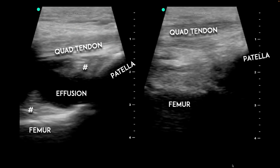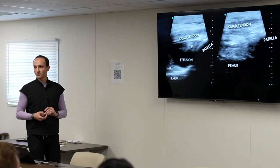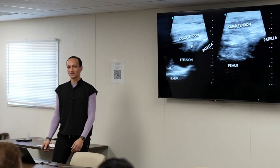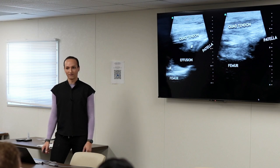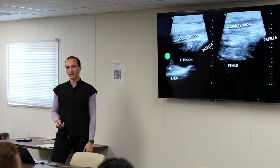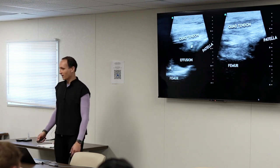Those little hyperechoic things attached to the femur and underneath the quad tendon are fat pads — always normal. There's always a little bit of fat in joints. They're just normal fat pads.